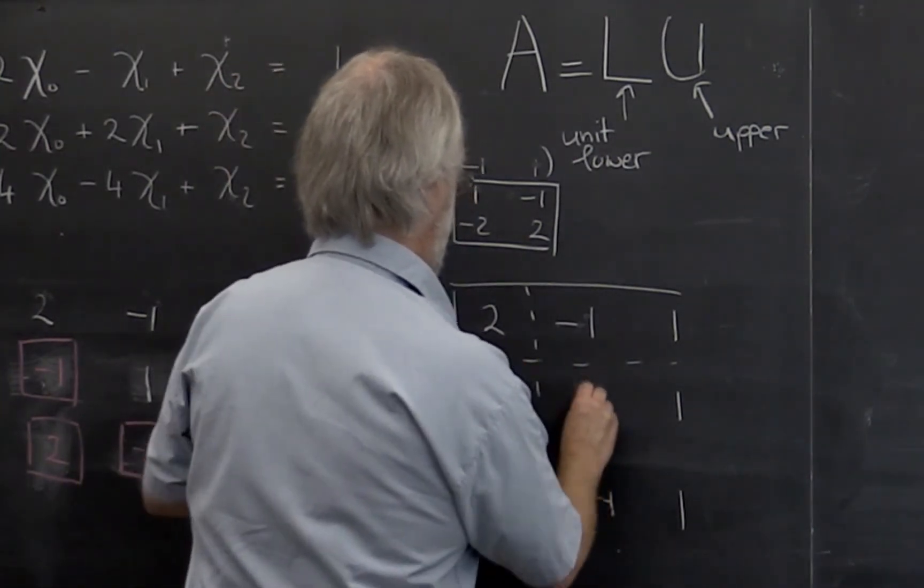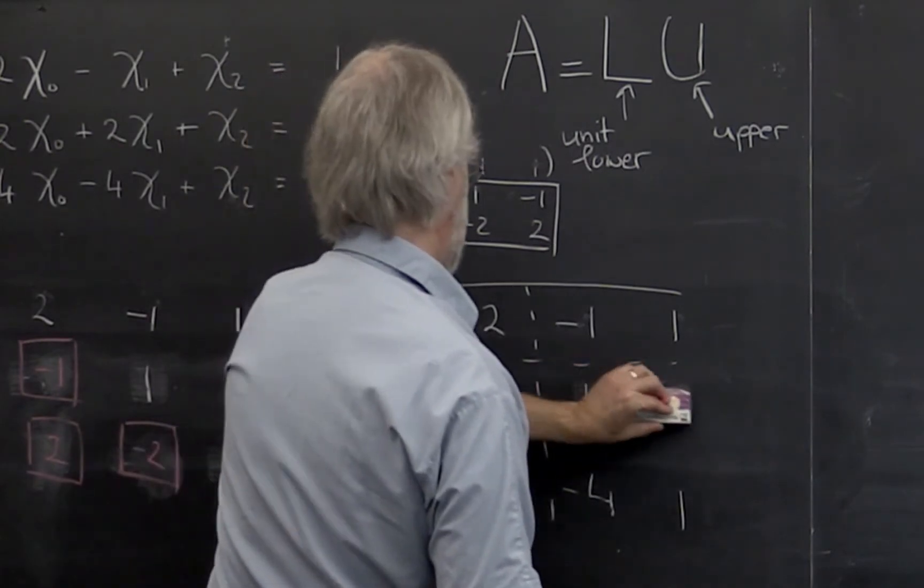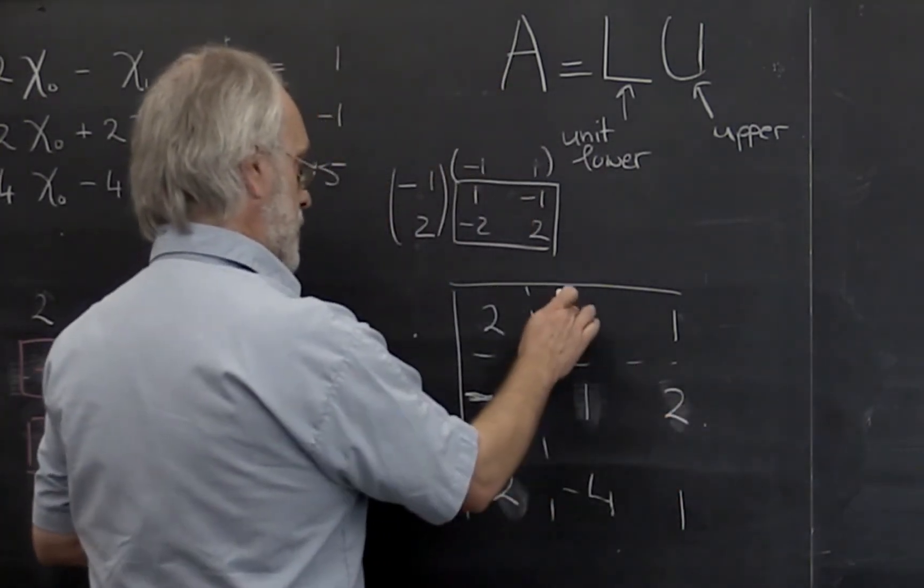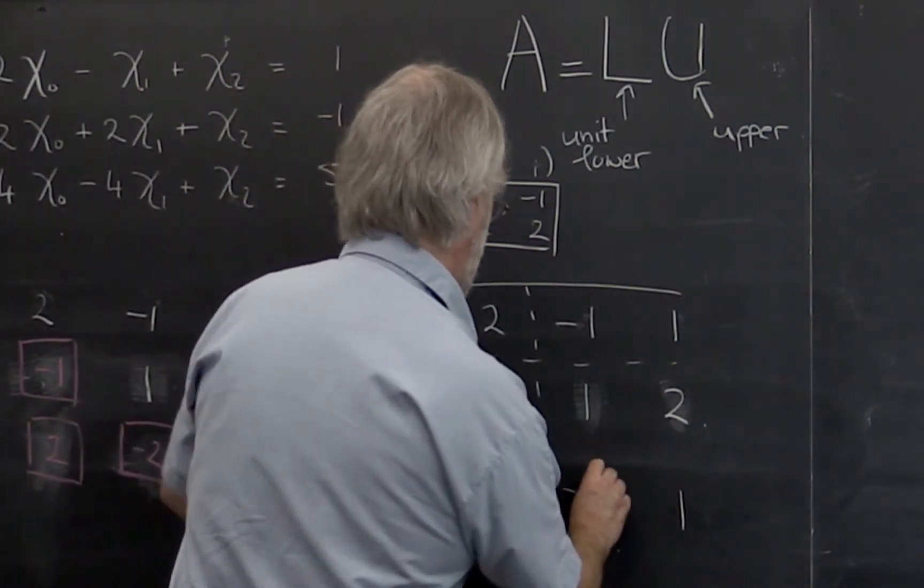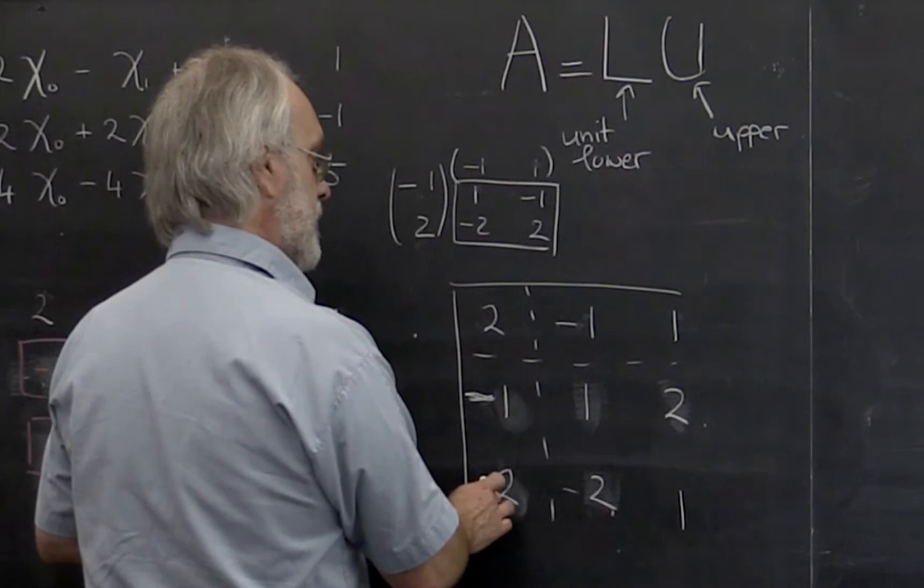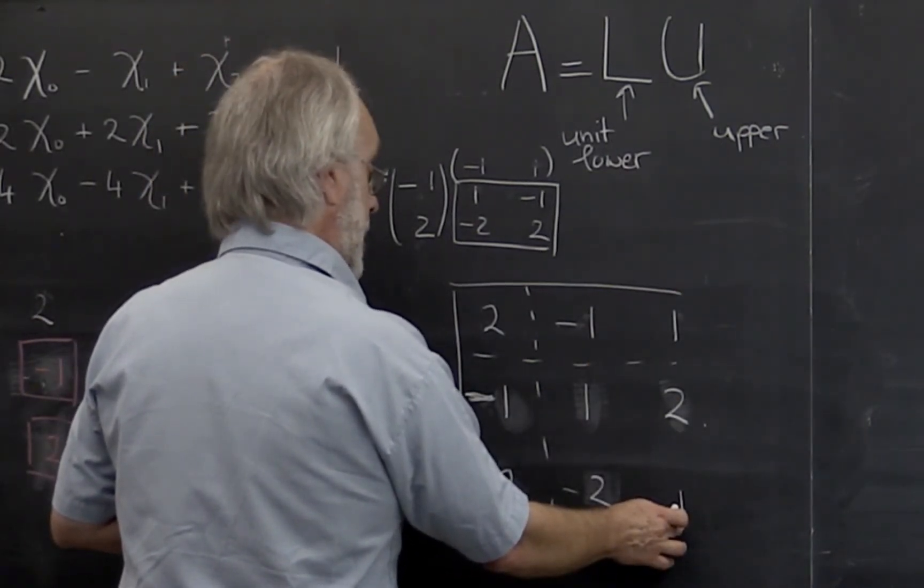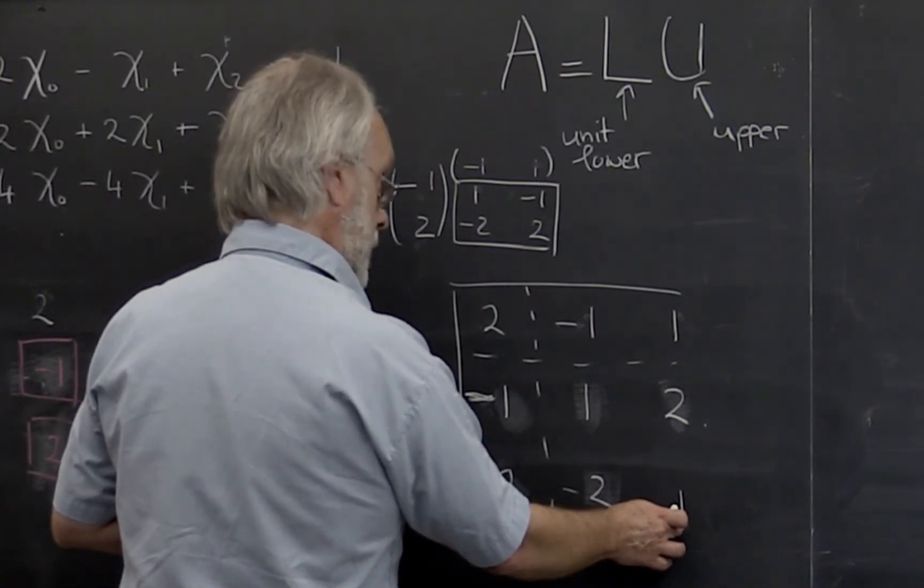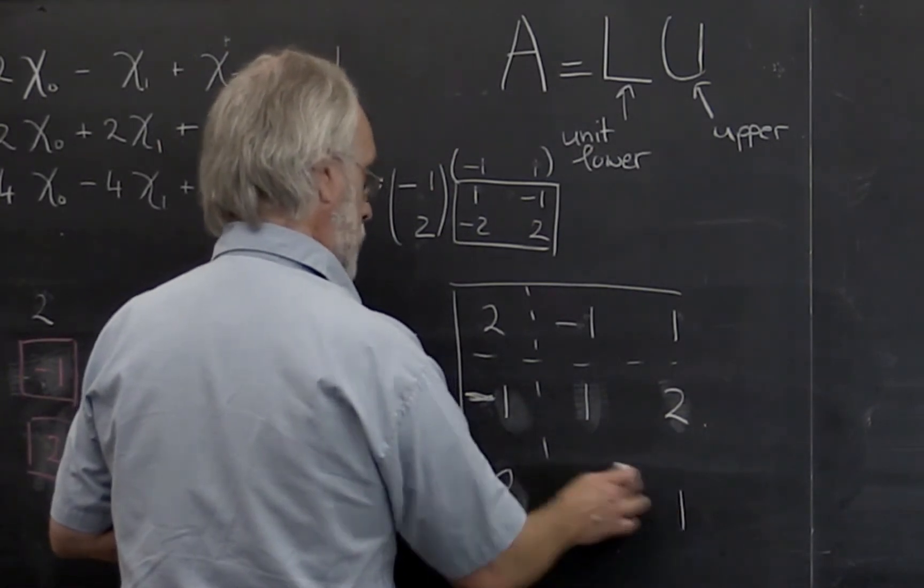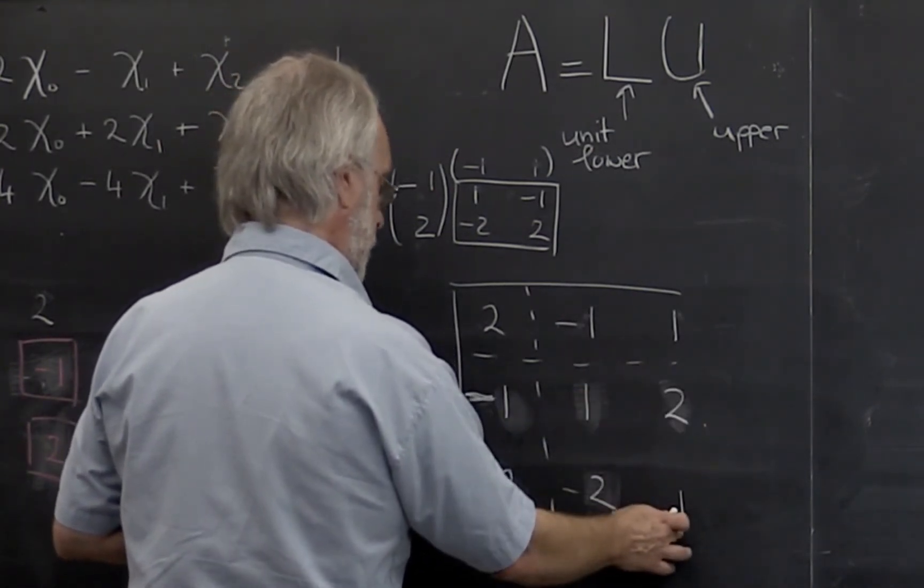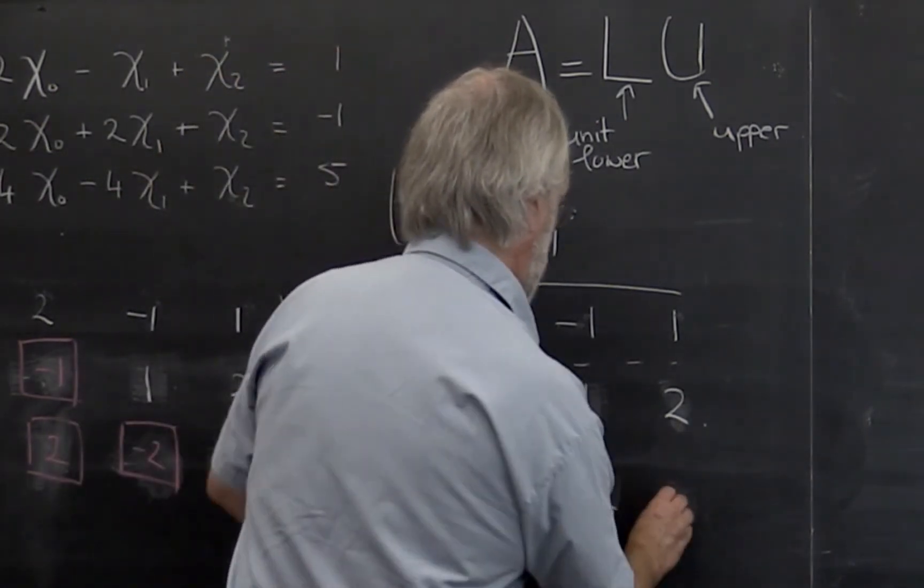So you get a 1. This times that is subtracted from that, so you get a 2. This times that is subtracted from that, that gives you a minus 2. Then this times that is subtracted from that, and that gives you a minus 1.